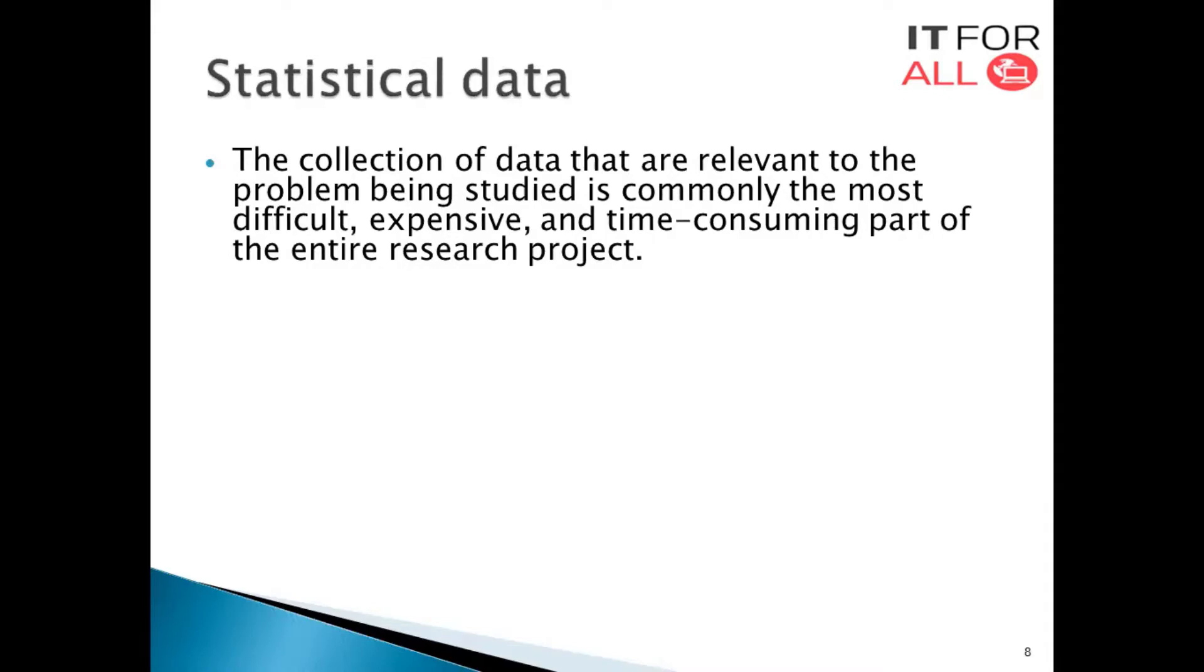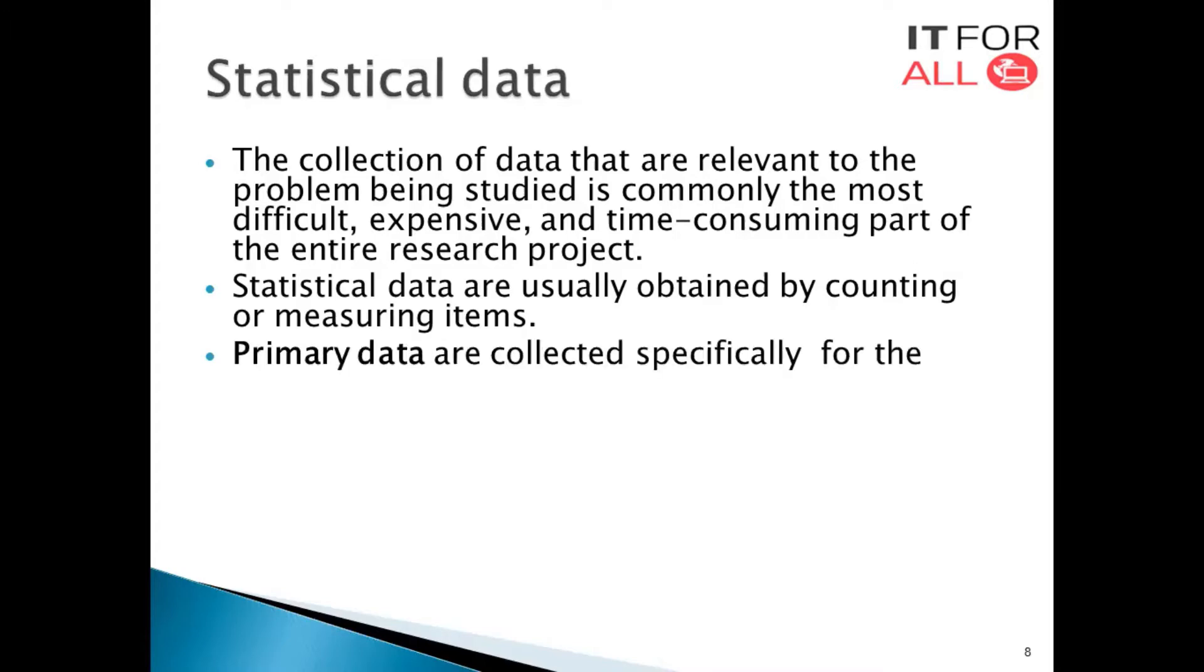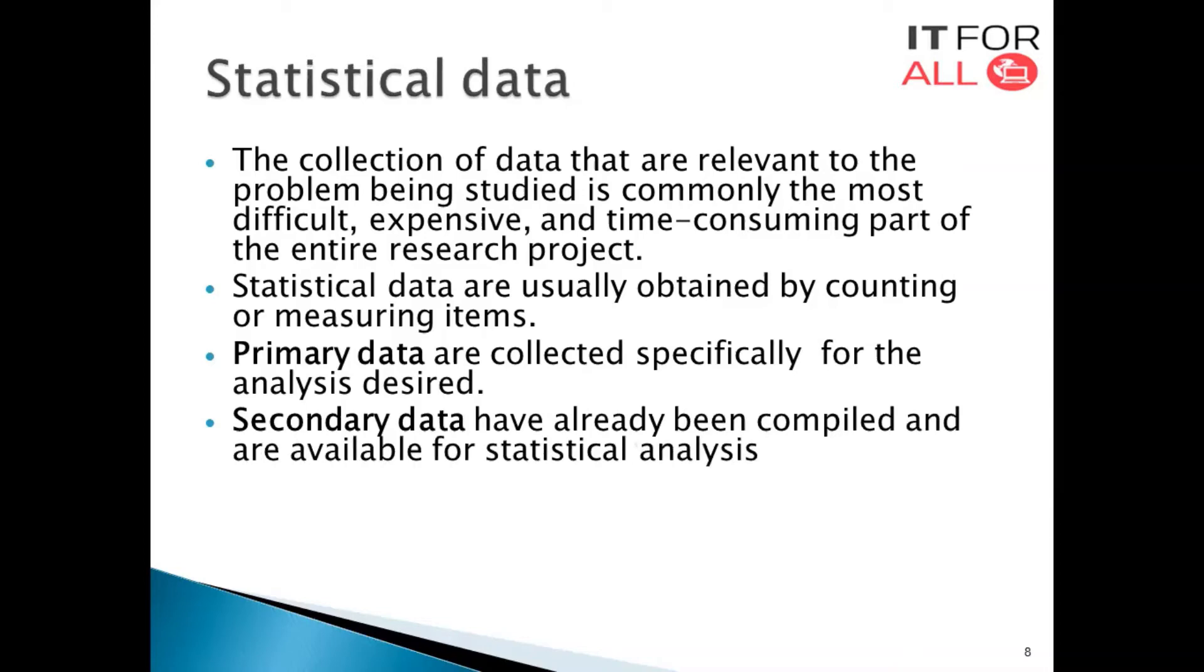Statistical data are usually obtained by counting or measuring items. There are two types of data that are countable or measurable. Primary data are collected specifically for the analysis desired by the company or organization, by their own employees or staff, collected directly from the field or specific area. Secondary data is the use of primary data by another organization that have already been compiled and are available for statistical analysis. Primary data becomes secondary data if you talk about it from different organization angles.